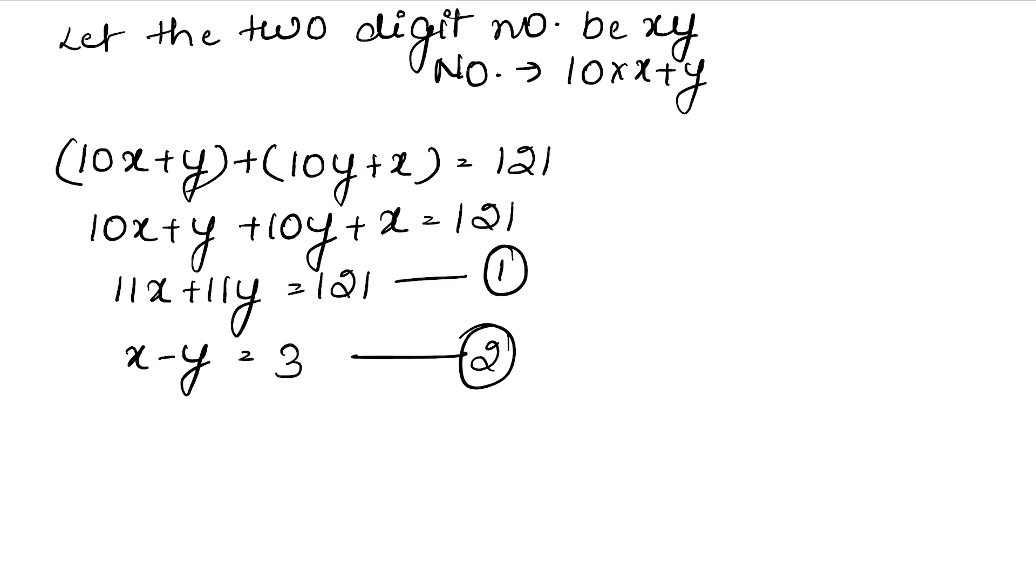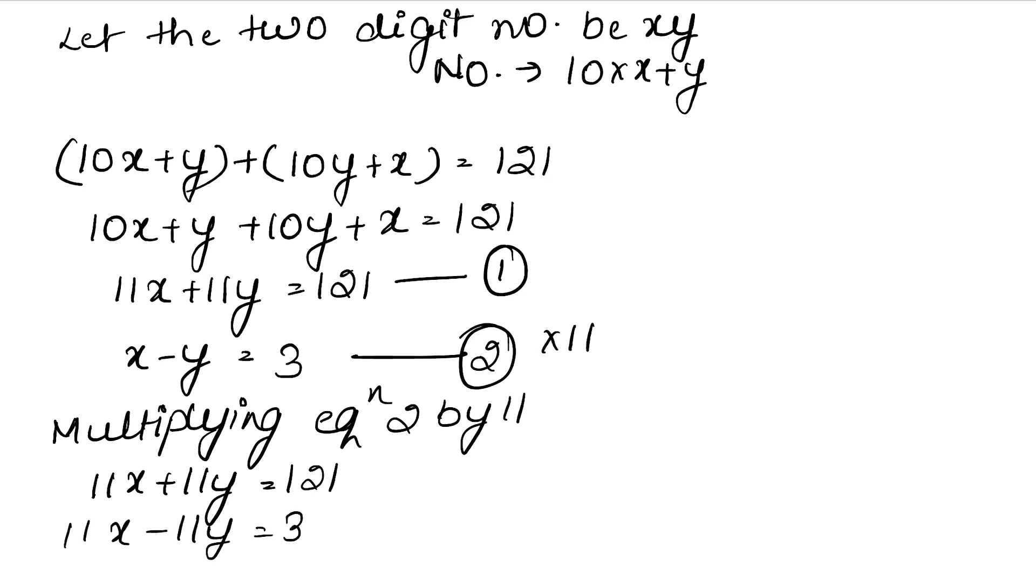Now how to solve it? In y, here minus, here plus. So if I multiply this whole equation by 11, then it will be easy, I don't need to change the sign. Multiplying equation 2 by 11: 11x plus 11y equals 121, and the other equation is 11x minus 11y equals 33.